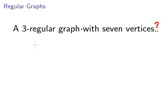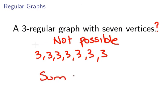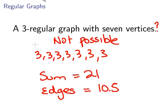So can we draw a three-regular graph with seven vertices? The answer is no — not possible. The reason is that the degree sequence would be three, three, three, three, three, three, three, and the sum of the degree sequence is 21, which would mean 10.5 edges. You can't have a graph with 10.5 edges, so it's not possible. And that ends our presentation on regular graphs.